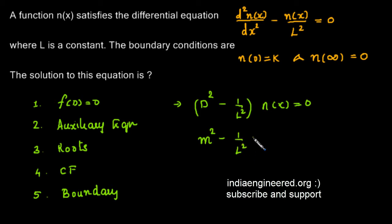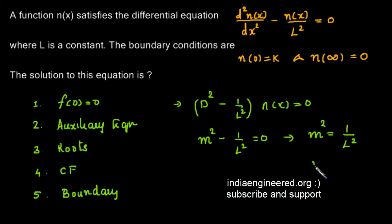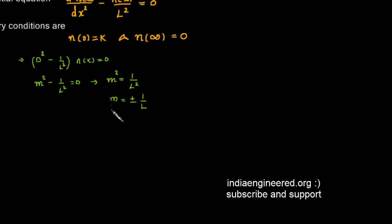This is the auxiliary equation. We need to find its roots. This means m² = 1/l², so m = ±1/l. We have found the roots, and now we need to write the complementary function.